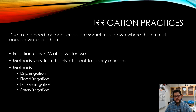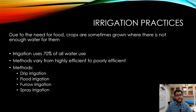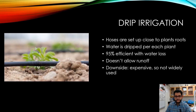Depending on how much money or water we have available, that's going to determine how much water we use and which irrigation method we choose. We're going to be looking at four main types: drip irrigation, flood, furrow, and spray irrigation.